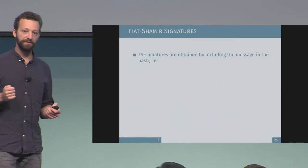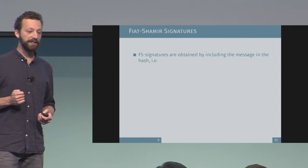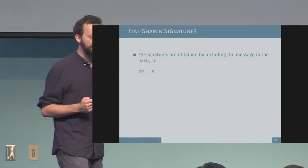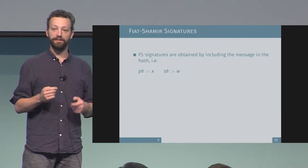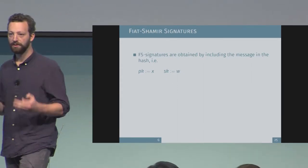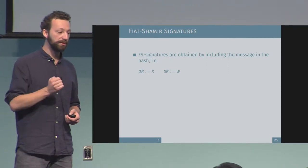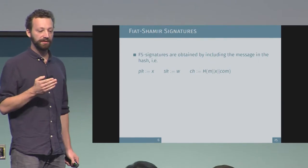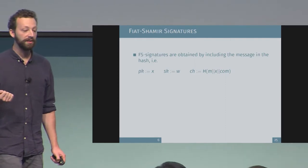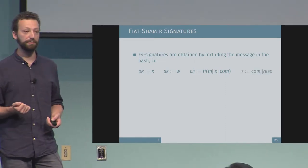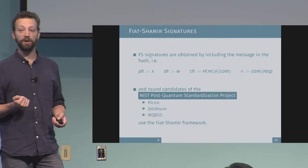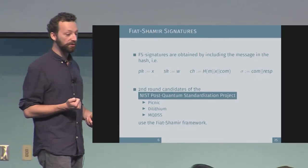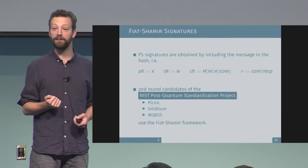To get signatures, a very simple extension: include the message you want to sign in the hash. To complete the picture, we have a public key and secret key consisting of some X and some W from a hard relation — W must be hard to obtain from just X. The challenge is now defined as the hash of the message, X, and the commitment, and the signature simply consists of this non-interactive proof. As a motivational note, there are currently three signature schemes in the second round of the NIST post-quantum standardization project that make use of this framework.